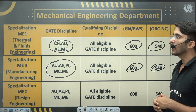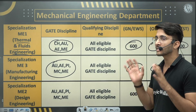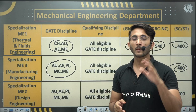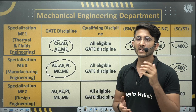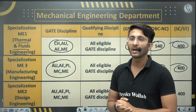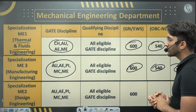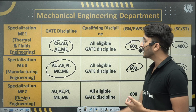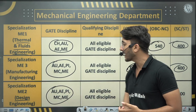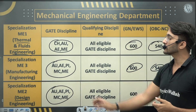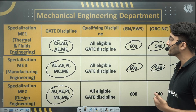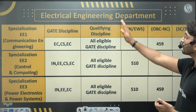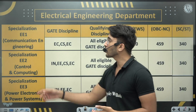Not every M.Tech specialization at IIT Bombay has a written test or interview, but some do, so you need to be prepared. For Design Engineering, eligible GATE disciplines are AU, AE, PI, MC, and ME, and the required GATE scores are mentioned in the PDF.